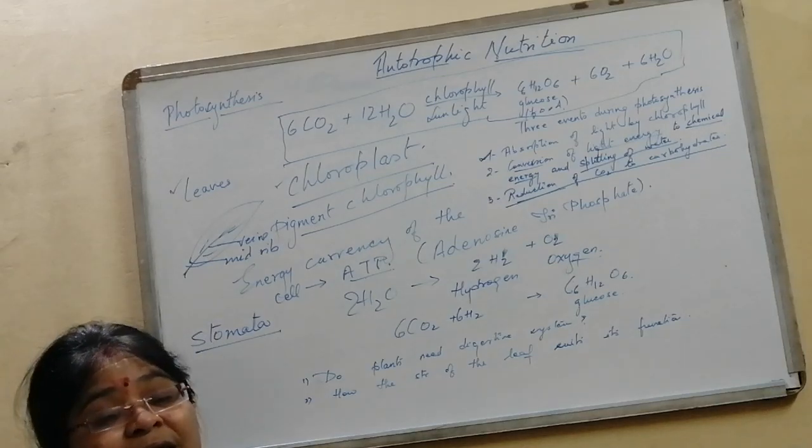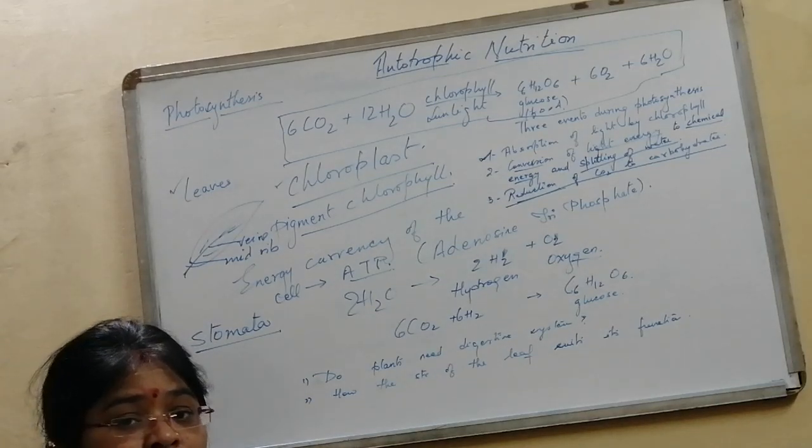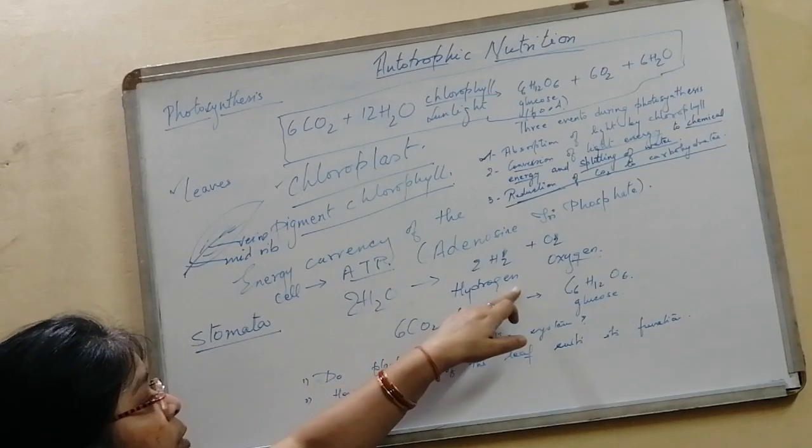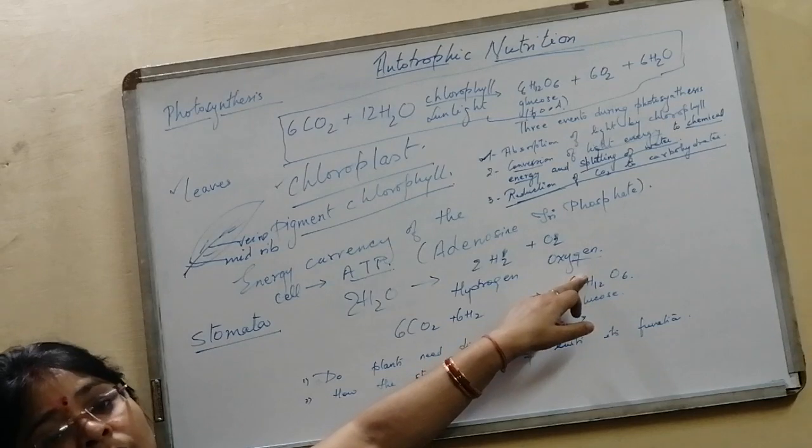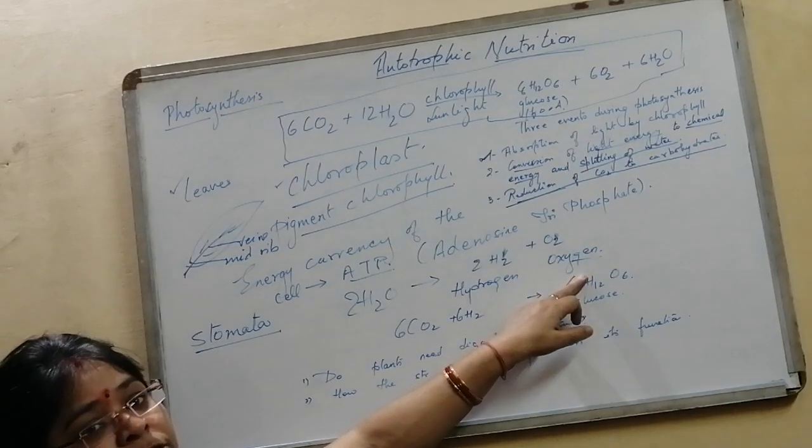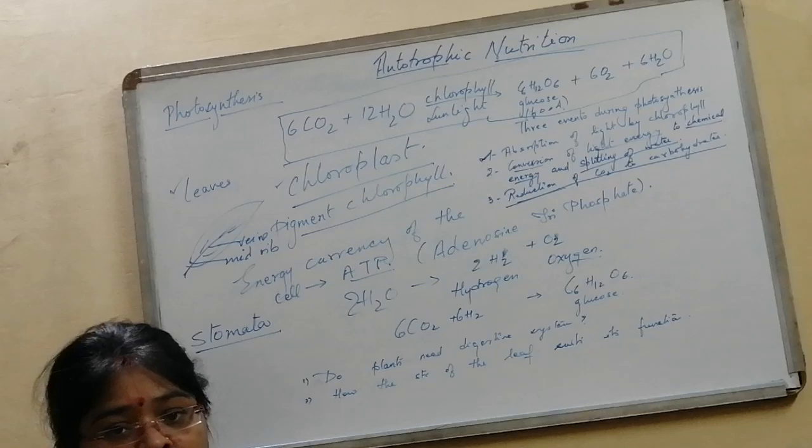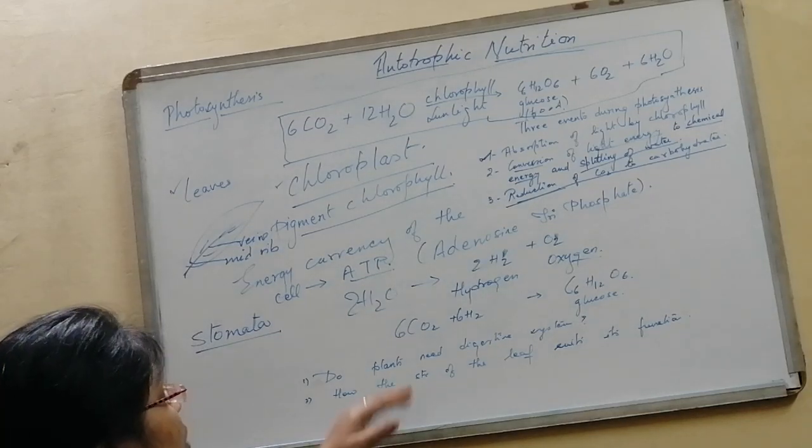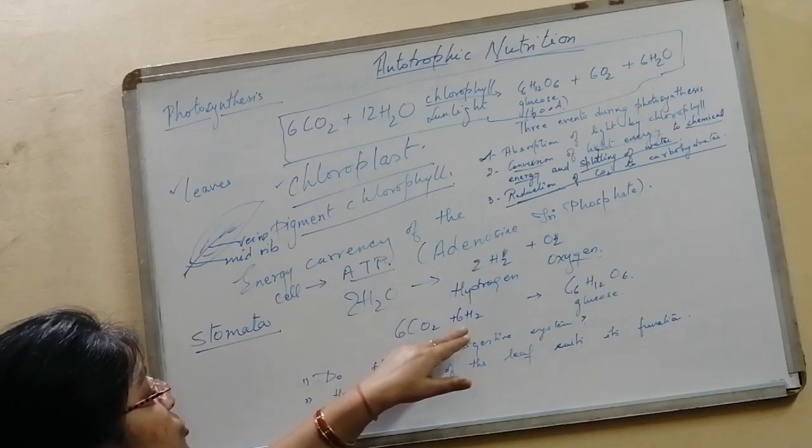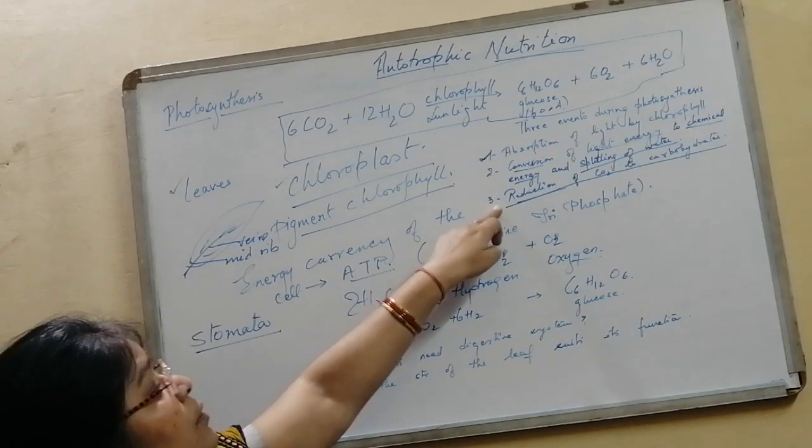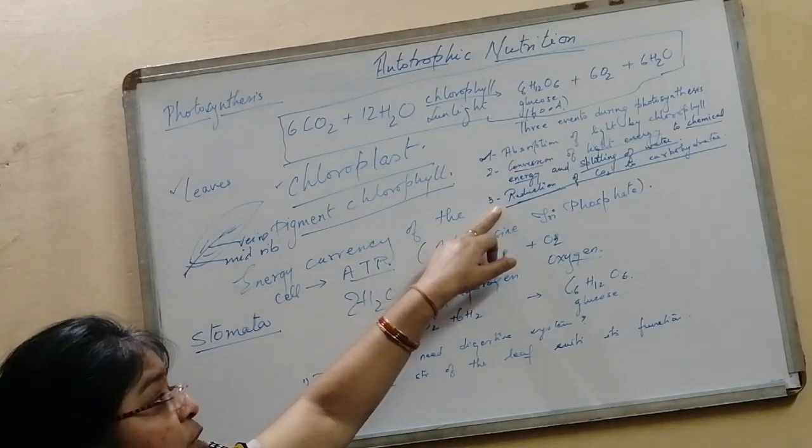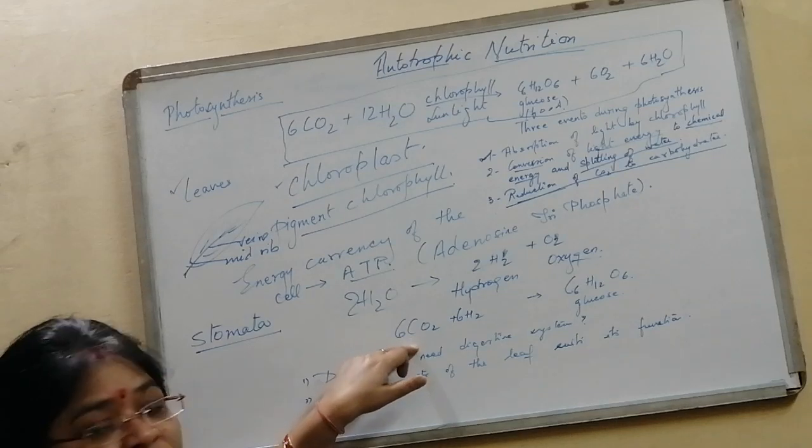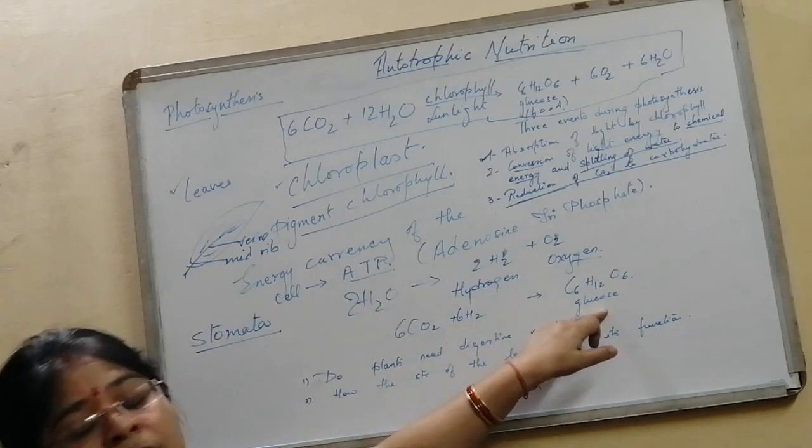The water molecule is getting broken down into hydrogen and oxygen. The oxygen comes out as oxygen gas, and the hydrogen is utilized in the third process - reduction of carbon dioxide. Reduction is the addition of hydrogen to carbon dioxide, which gives you glucose.